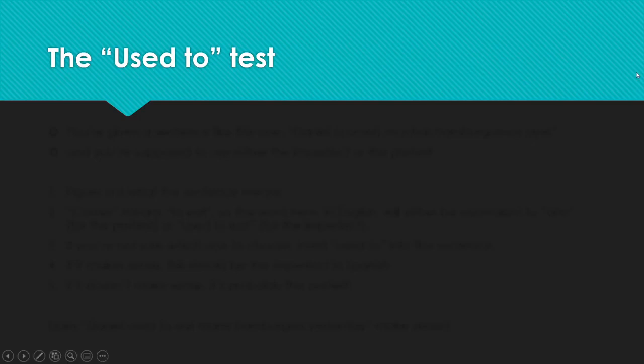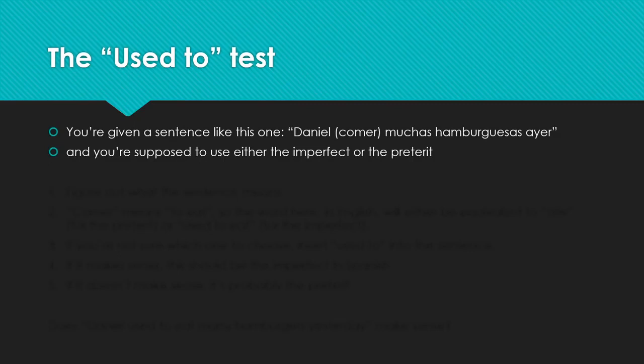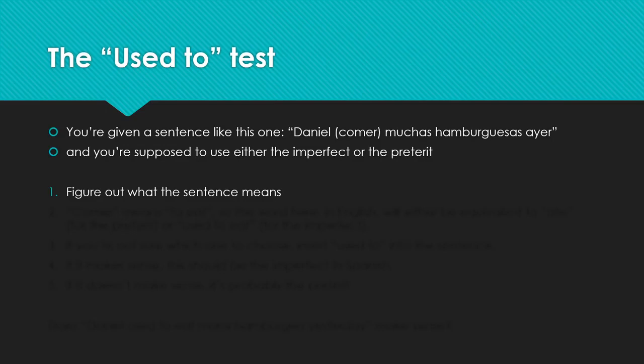If you're ever unsure whether to use the imperfect or the preterite, here's a technique that has helped me throughout all my years taking Spanish. Imagine you're given a sentence like: 'Daniel ___ muchas hamburguesas ayer,' and you need to conjugate 'comer.' First, figure out what the sentence means — something important like 'ayer' means yesterday. 'Comer' means to eat, so the verb will either be equivalent to 'ate' for the preterite, or 'used to eat' for the imperfect.